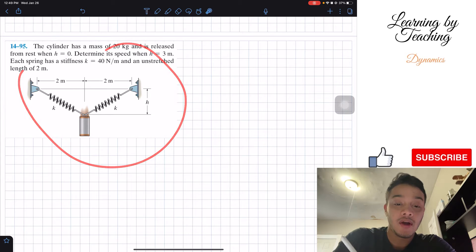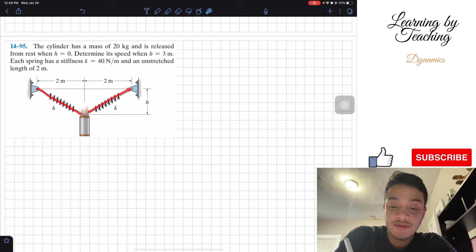So what do we have here? We got this cylinder and it's attached by these two springs. When it's released, we want to know what's the velocity when this h is equal to three meters. That's basically our problem.